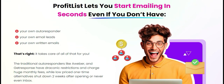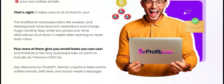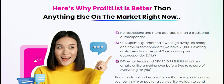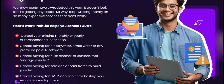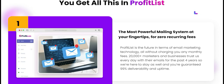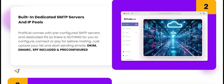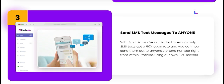To give you a practical perspective, let's consider a hypothetical scenario. Imagine you run an online store selling eco-friendly products. Using Profit List, you could quickly acquire a verified email list of environmentally conscious consumers. By leveraging the segmentation feature, you can tailor your campaigns to highlight specific products, seasonal promotions, or educational content about sustainability. This targeted approach could lead to higher open rates, more engagement, and ultimately increased sales.